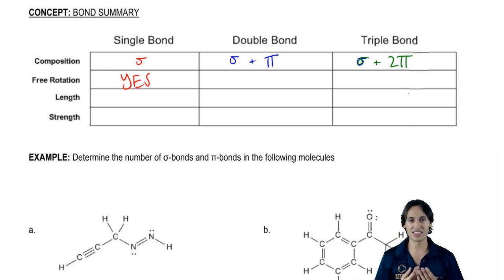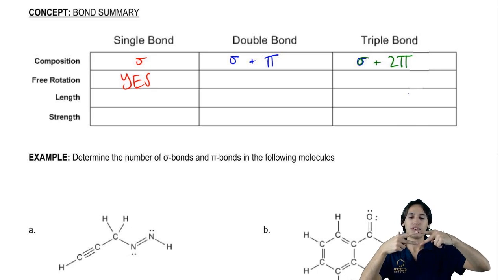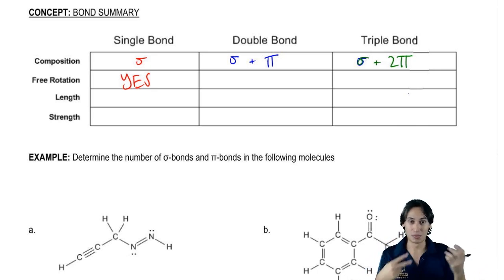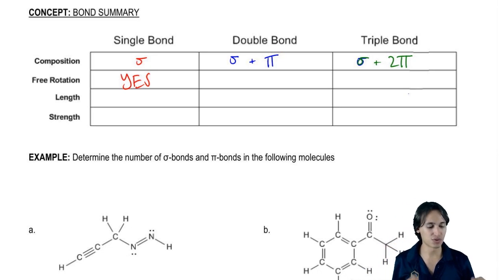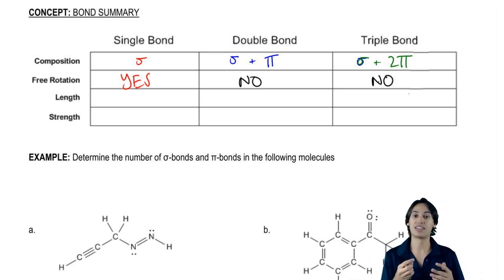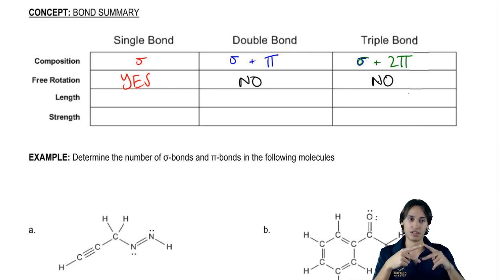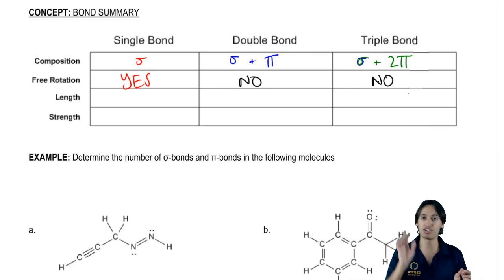And that's energy that these atoms don't have most of the time. So what that means is that these double bonds are not going to be able to break. And that's what I want you guys to write for double and triple. They're both not going to be able to rotate because if you rotate them, you're going to have to break them and it's very difficult to break the bonds just to rotate.